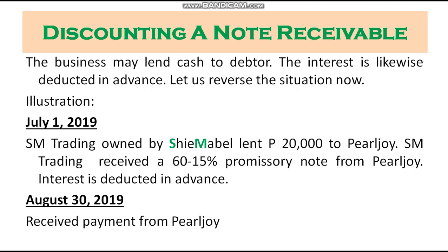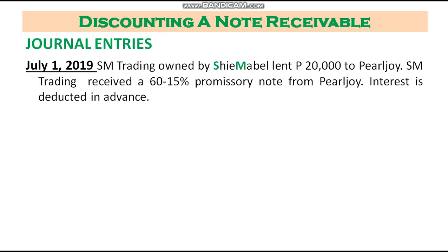A business may also lend cash — in this case, the interest is likewise deducted in advance. Now let us reverse the situation using the same amounts. On July 1, 2019, SM Trading, owned by Shima Bell, lent 20,000 to Pearljoy. SM Trading received a 60-day, 15% promissory note from Pearljoy, and interest is deducted in advance. On August 30, payment was received from Pearljoy.